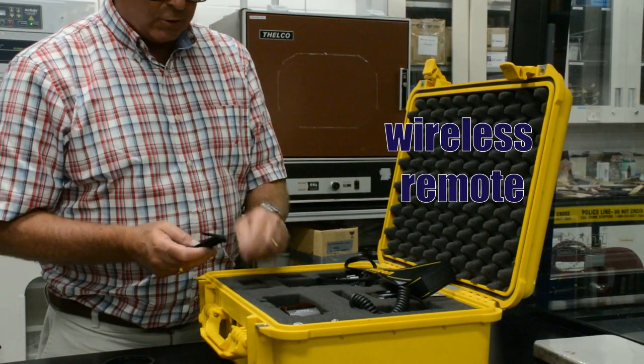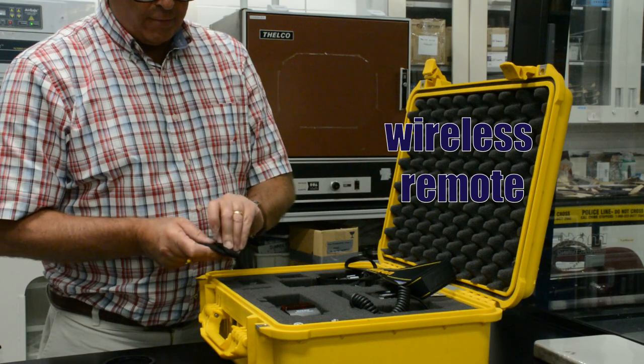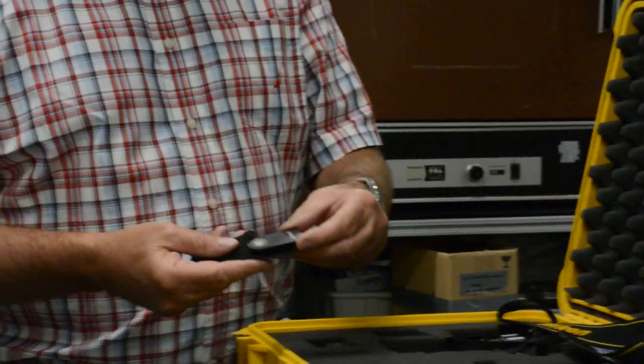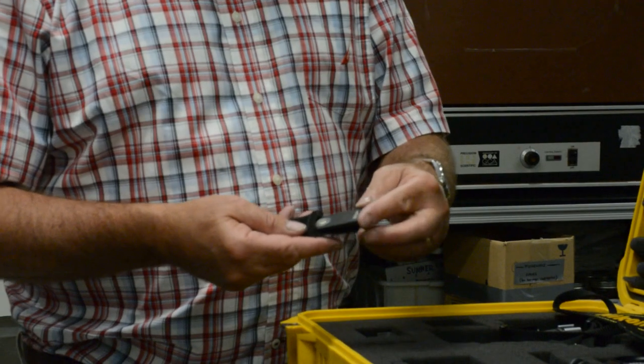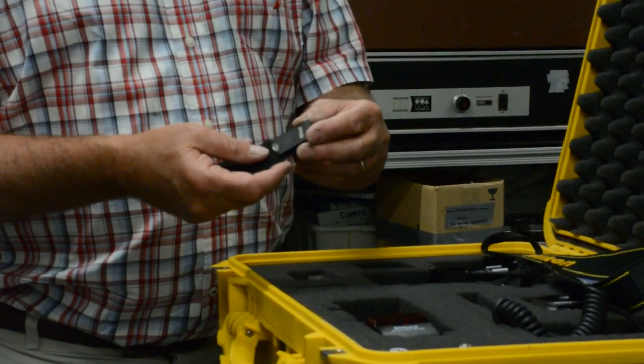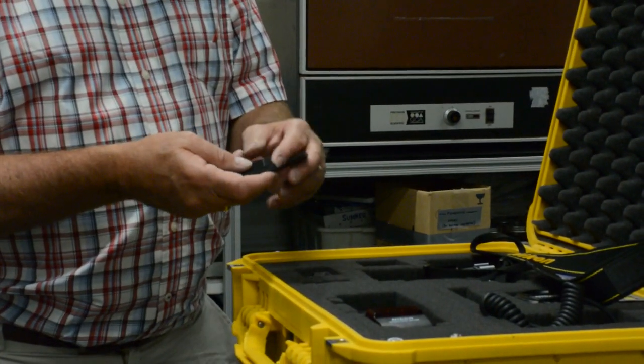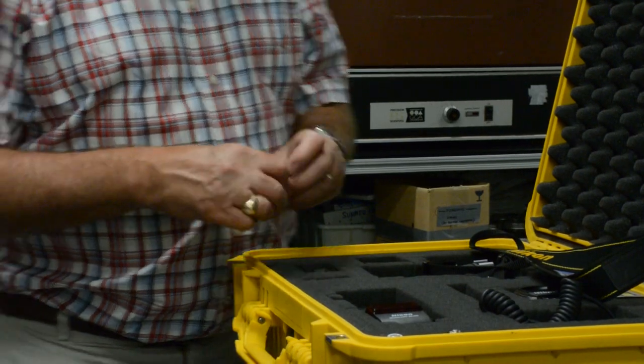Continuing on in our tour of the camera here, there is another pouch in this little cutout here that has a remote control unit in it. To remotely operate the shutter release button or to take photos remotely from the actual camera itself.